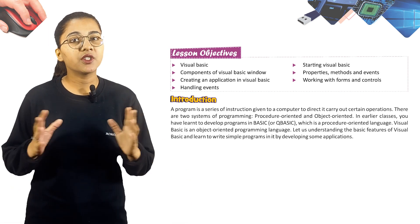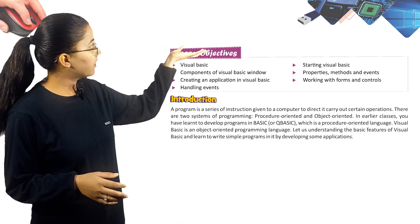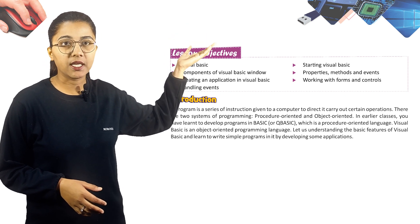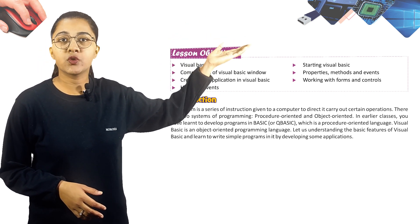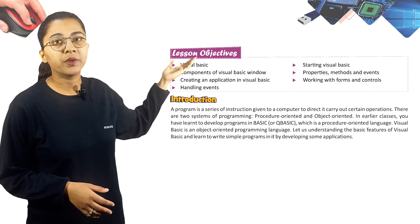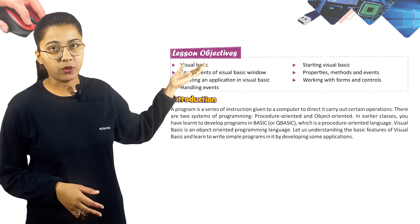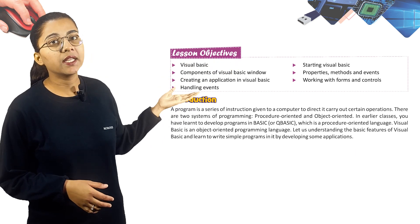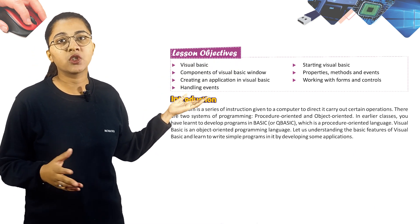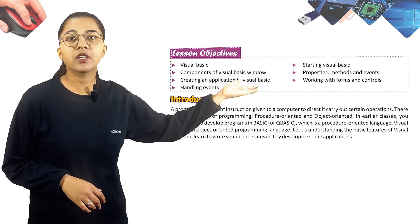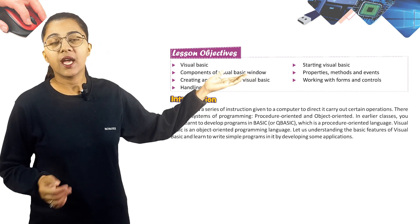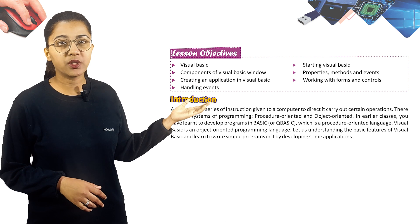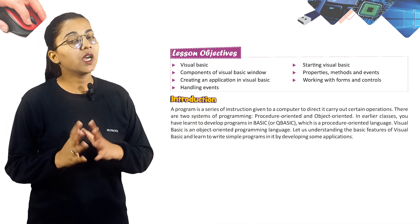Before we start the chapter, here are our lesson objectives: Visual Basic, starting Visual Basic, components of the Visual Basic window, properties, methods and events, creating an application in Visual Basic, working with forms and controls, and lastly, handling events. These are the points we are going to discuss in this chapter in detail.